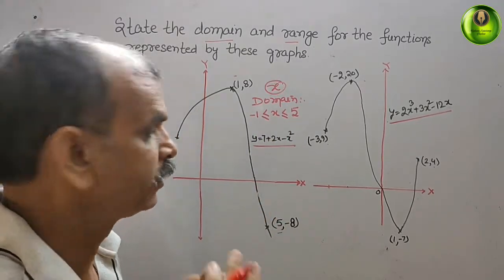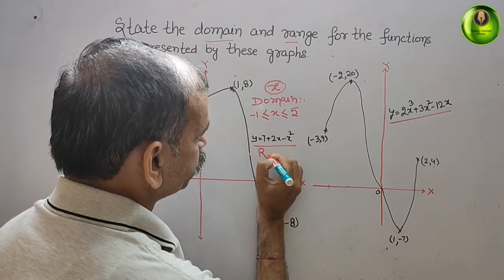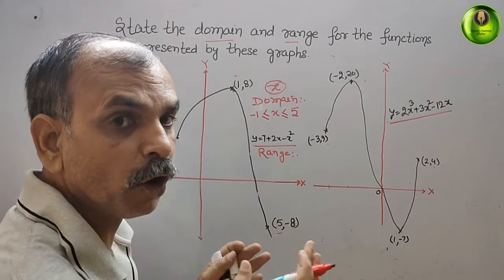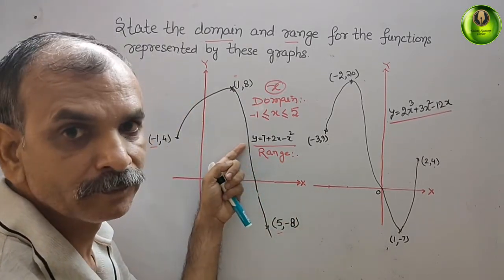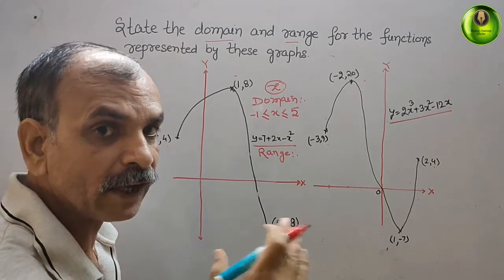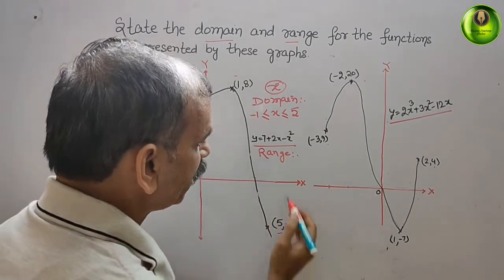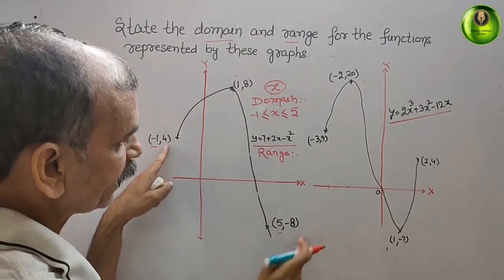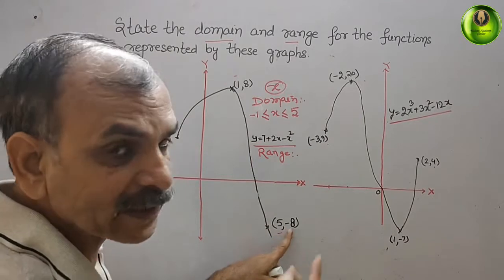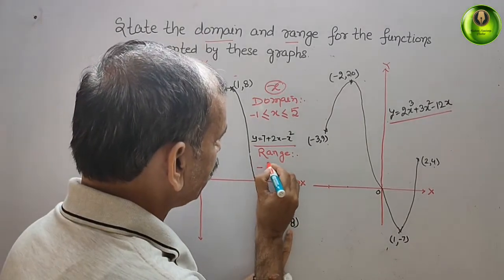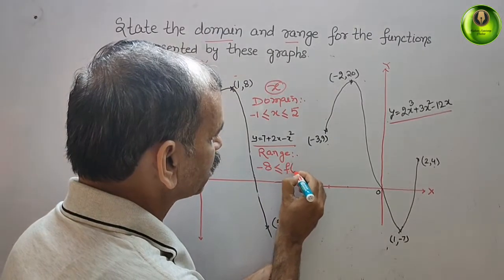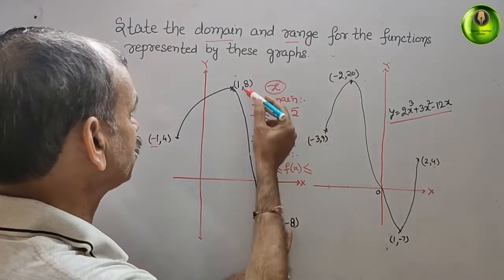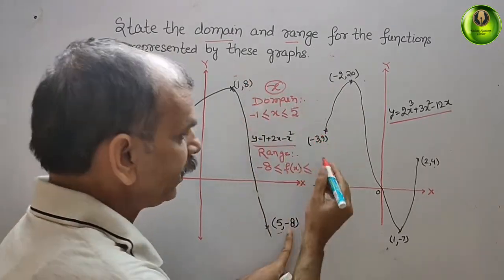Now for the range, which means the solution values — that is your y. The minimum value of y is minus 8 and the maximum is 8, checking values of 4, 8, and minus 8. So we write the range as minus 8 less than or equal to f(x) less than or equal to 8.